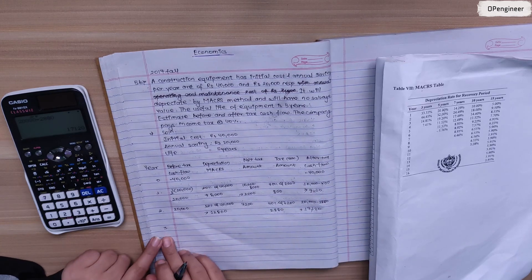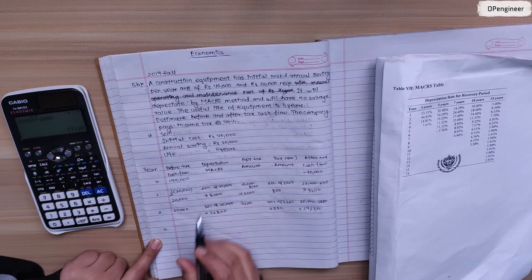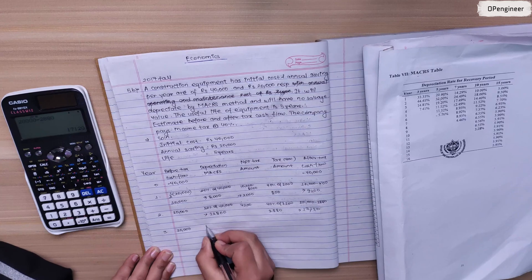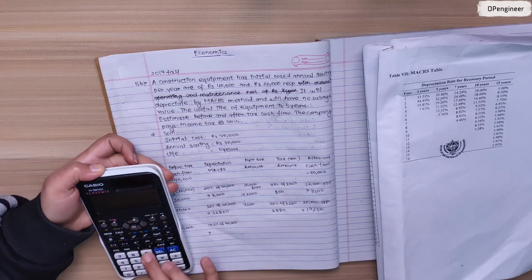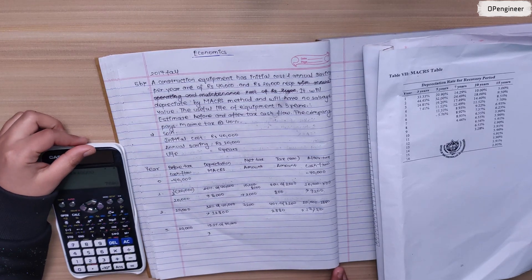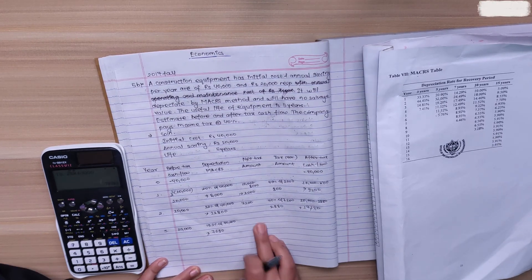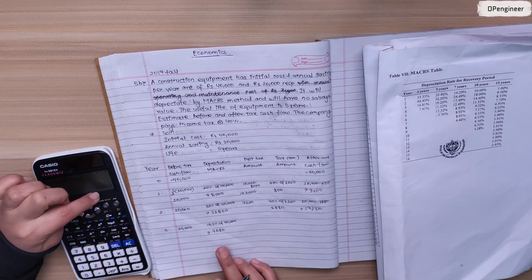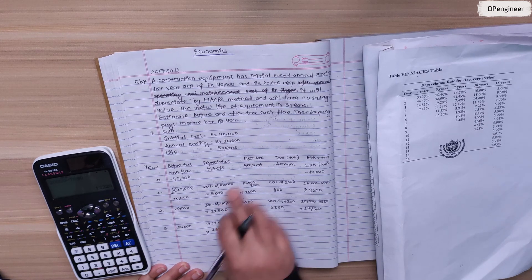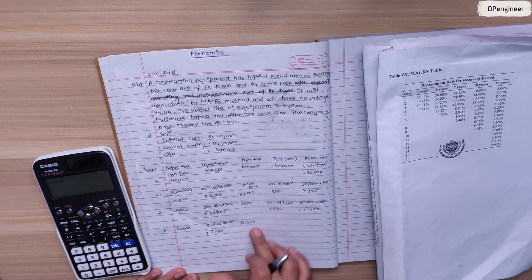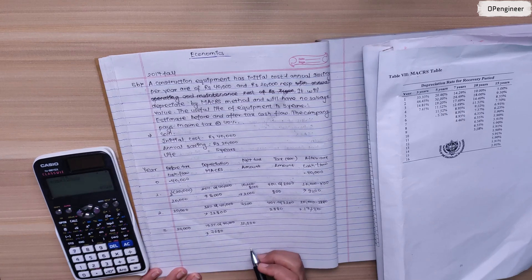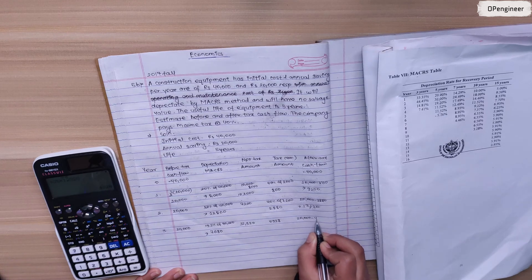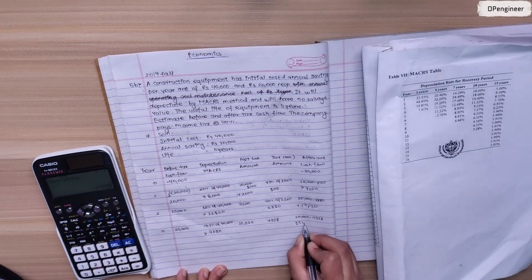Third year, before tax cash flow from annual savings is 20,000. Depreciation is 19.2% of 40,000, which is 7,680. Net taxable amount is 20,000 minus 7,680 equals 12,320. Tax amount is 40% of 12,320, which is 4,928. After tax cash flow is before tax cash flow minus tax amount, 20,000 minus 4,928 equals 15,072.